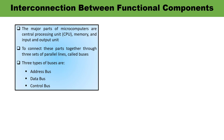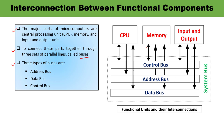Next is the interconnection between the functional components. The major parts of the microcomputer — CPU, memory, input unit, and output unit — are all connected through a set of parallel lines known as the bus. The bus is a communication system which transfers data between the components inside a computer or between computers. There are three types of buses: address bus, data bus, and control bus, forming the overall system bus.